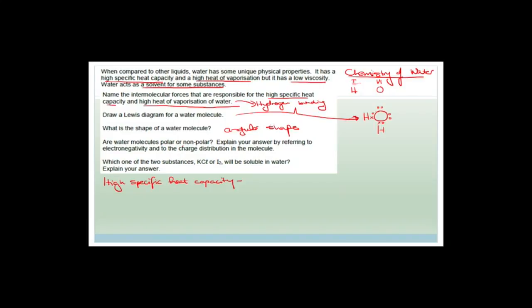Are water molecules polar or non-polar? Explain your answer by referring to electronegativity and to the charge distribution of water. You really need your periodic tables here. The electronegativity of oxygen is 3.5 and the electronegativity of hydrogen is 2.1.